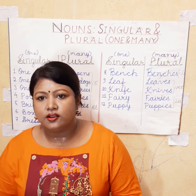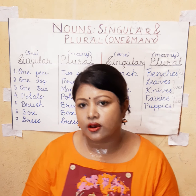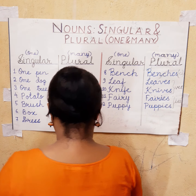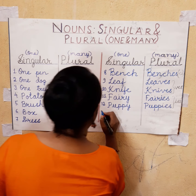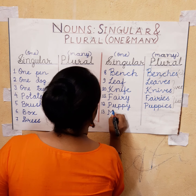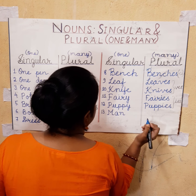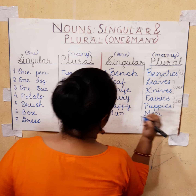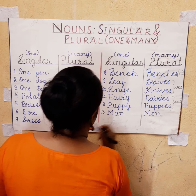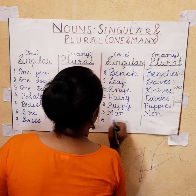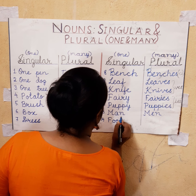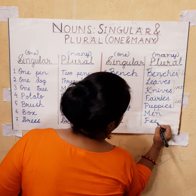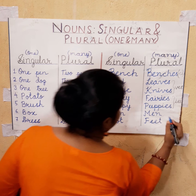Some nouns do not follow any rule when changing from singular to plural. For example, man — these types of words do not follow any rule. Man becomes men: one man, two men. Another can be foot, which becomes feet. You have to remember that some words do not actually follow any rule, so they are quite different.